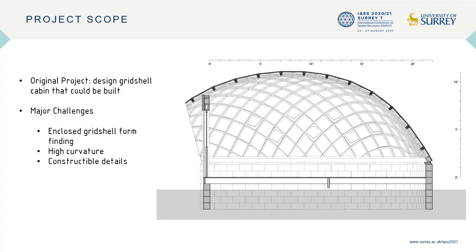First of all, our use of an enclosed grid shell meant form-finding had to be done without prior specification of anchor points. The high curvature of the grid also required a form that the timber lats would naturally bend to. Finally, the exterior enclosure had to account for the constantly changing grid with detail assemblies that were robust and adaptable.